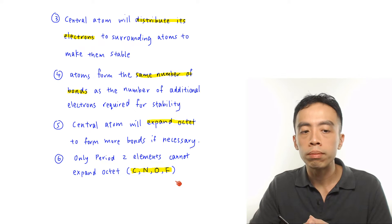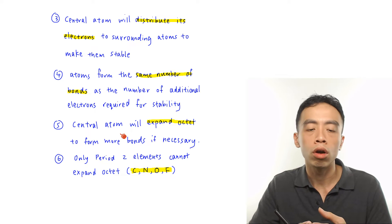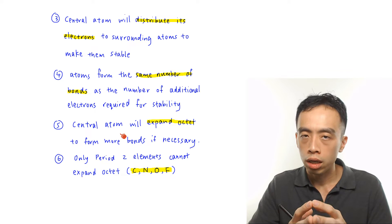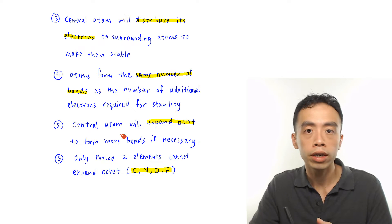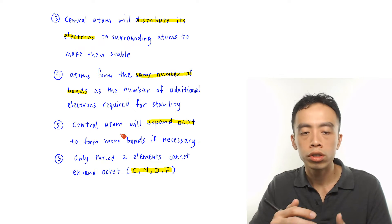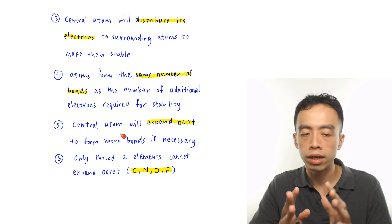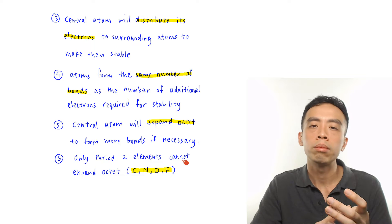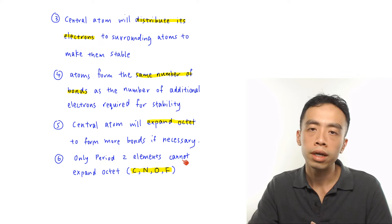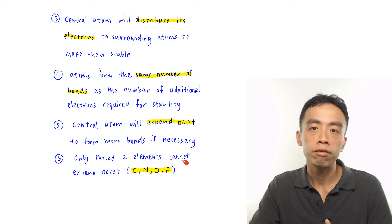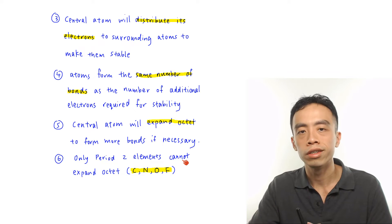Take note: expansion of octet only applies to the central atom — usually the surrounding atoms would not expand octet. My preference for remembering is to just remember these four elements — carbon, nitrogen, oxygen, fluorine — cannot expand octet. All other elements are able to form more bonds and can have more than 8 electrons around their valence shell if necessary. Let's have some examples to illustrate.